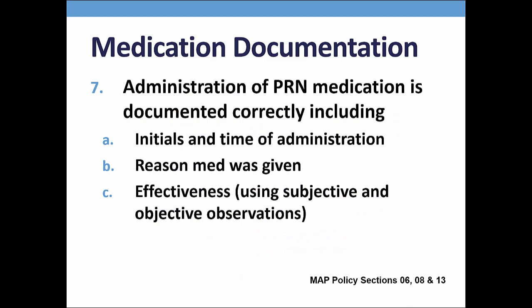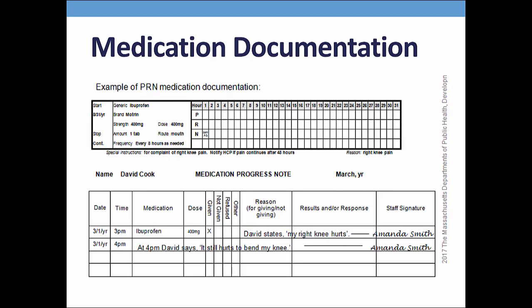Additional documentation is required for the administration of a PRN medication, including the time of administration with a set of initials and a progress note explaining the reason for the administration. A follow-up progress note must be written which includes the effectiveness of the medication in the form of subjective and/or objective information. On your screen is a documentation example of an administered PRN medication and the corresponding progress notes.